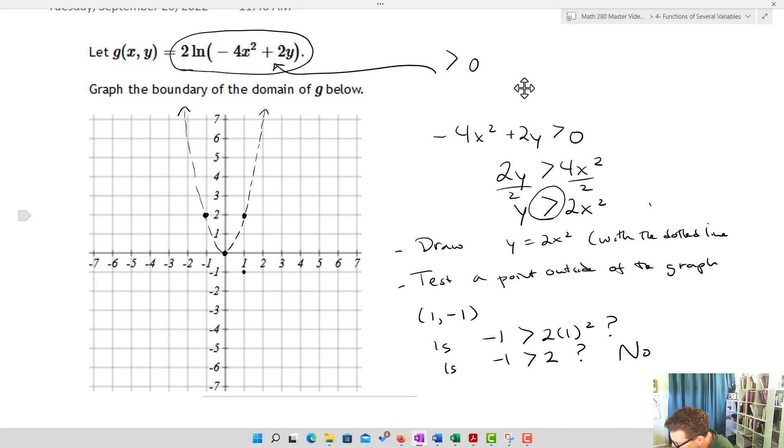The answer is no, so that means that I'm not going to shade on the side with (1, -1). I'll shade on the other side, the inside of that function. Okay, and there it is—that's the boundary of the domain of g. We make a distinction, we figure out what are the restrictions on this function here, the function that's g of xy.